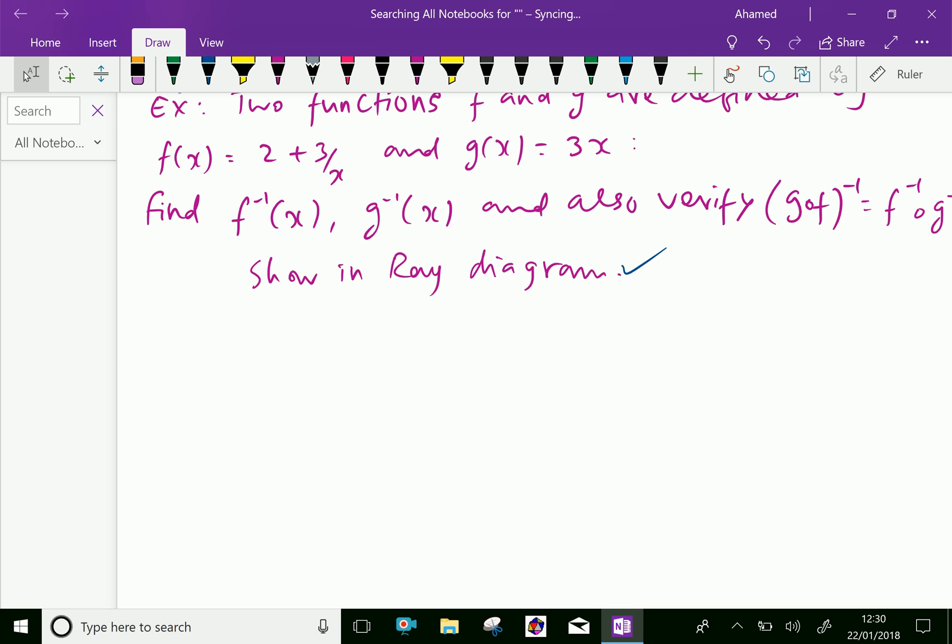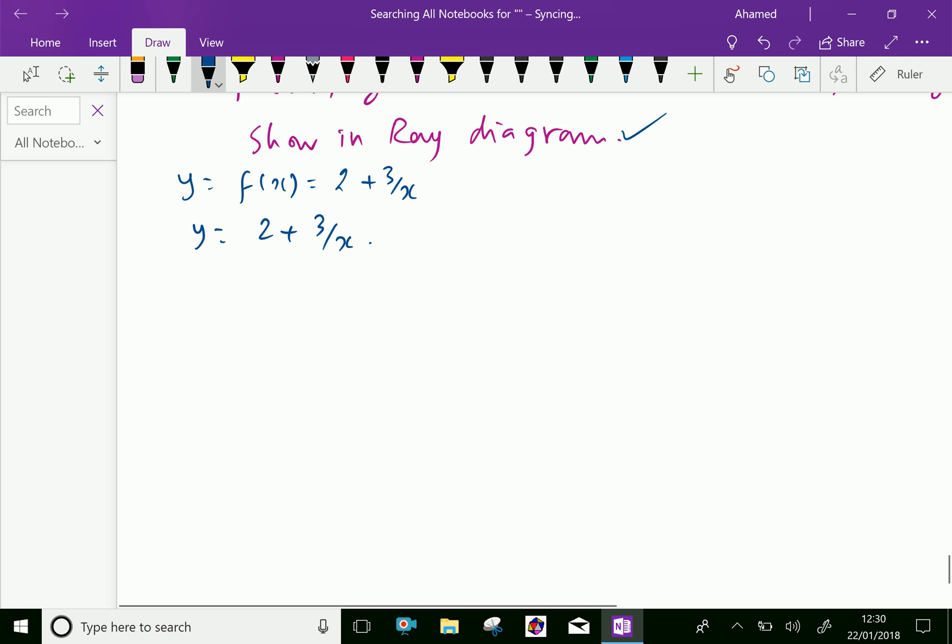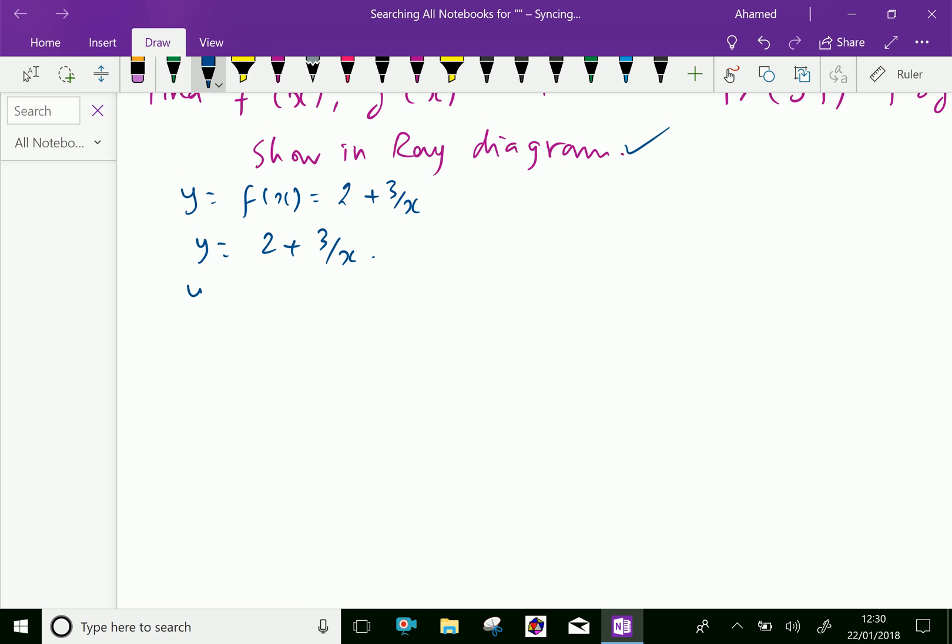We will start one by one. Let y equal f of x equal 2 plus 3 over x. Here we write y equal 2 plus 3 over x. Then get x in terms of y, means y minus 2 equal 3 over x. Then by cross multiplying, y minus 2 into x equal 3.